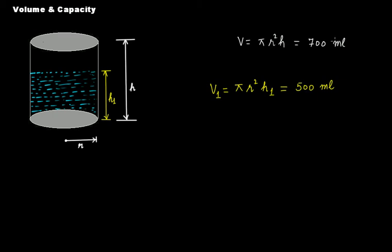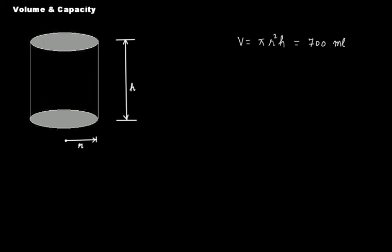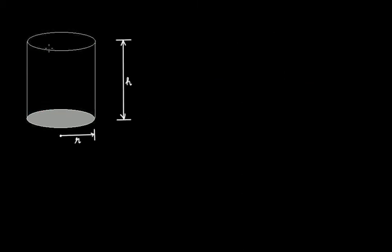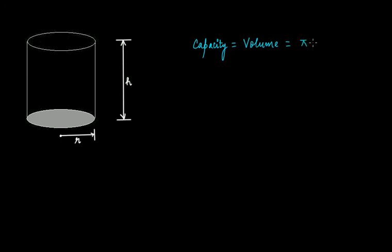Well, 500 ml is not the capacity — it is the liquid stored in this can. The capacity is 700 ml, that is the total volume of this cylindrical shaped can. Now consider a beaker whose top surface is not present — it's open. If someone asks what is the capacity of this beaker — that is, what volume of gas or liquid it can store — then its capacity is actually equal to its volume, which is πr²h.